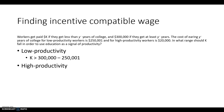For high productivity workers, you want them to have an incentive to go to college. So you want what they earn if they do go to college — which is $300,000 minus their cost of college, $20,000 — to be greater than what they would earn if they didn't go to college, K. Setting up these incentive compatible equations, we can see the constraints that K must satisfy.